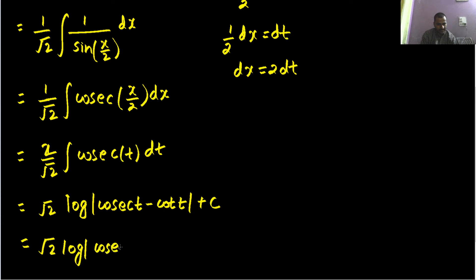So cosecant x by 2 minus cot x by 2 plus a constant c, this is your final answer.